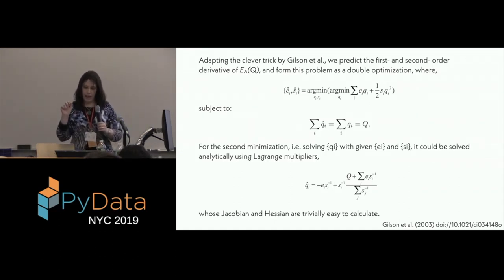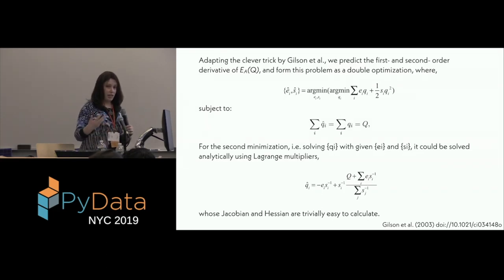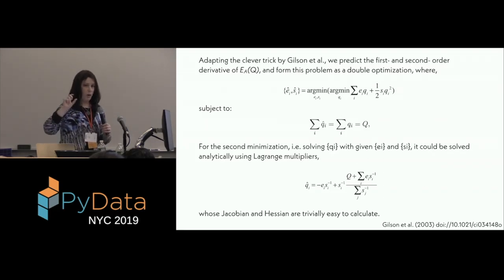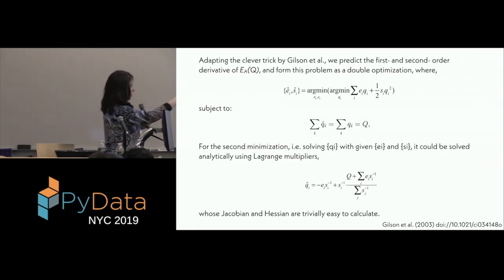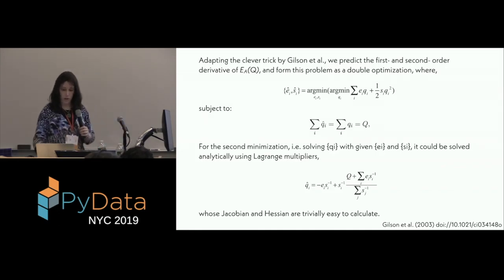So we define E and S as the first and second derivative. And then we optimize Q in terms of E and S. So now we have this optimization and turns out that there is an analytic solution using Lagrange multipliers with a constraint of the sum of the partial charges equal to the total charge of the molecule. And now this solution is something which is down here, that's the solution. And this is something that we can calculate the Jacobian and the Hessian in a pretty straightforward way.